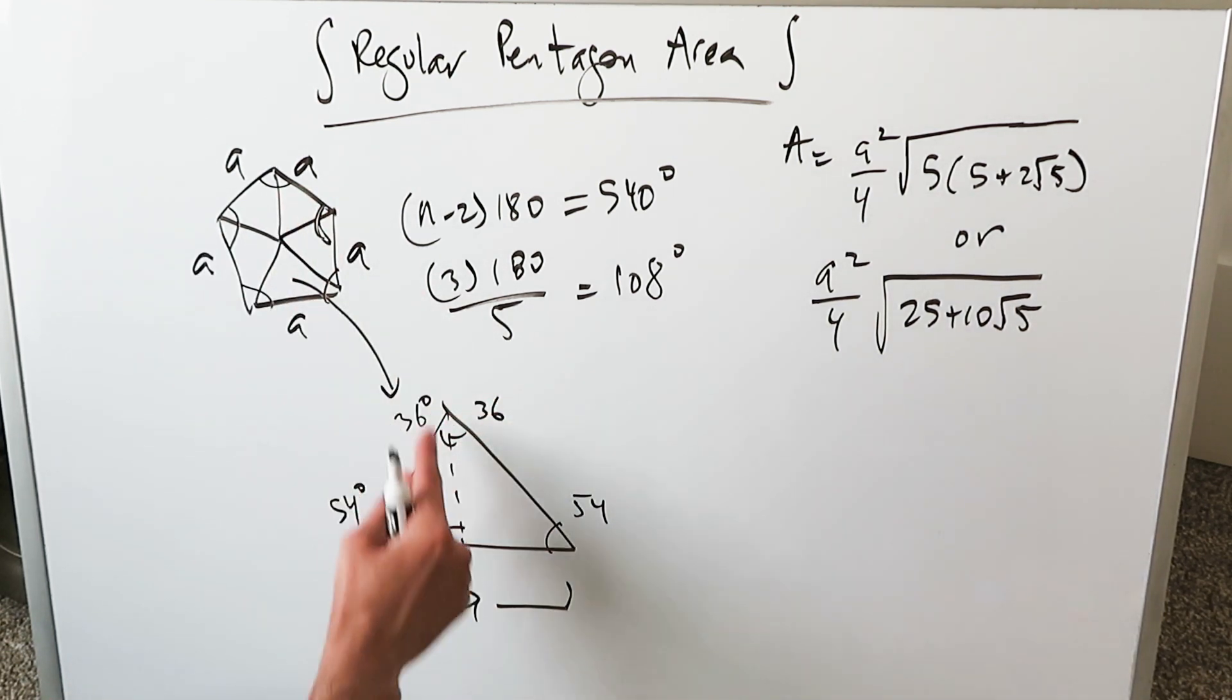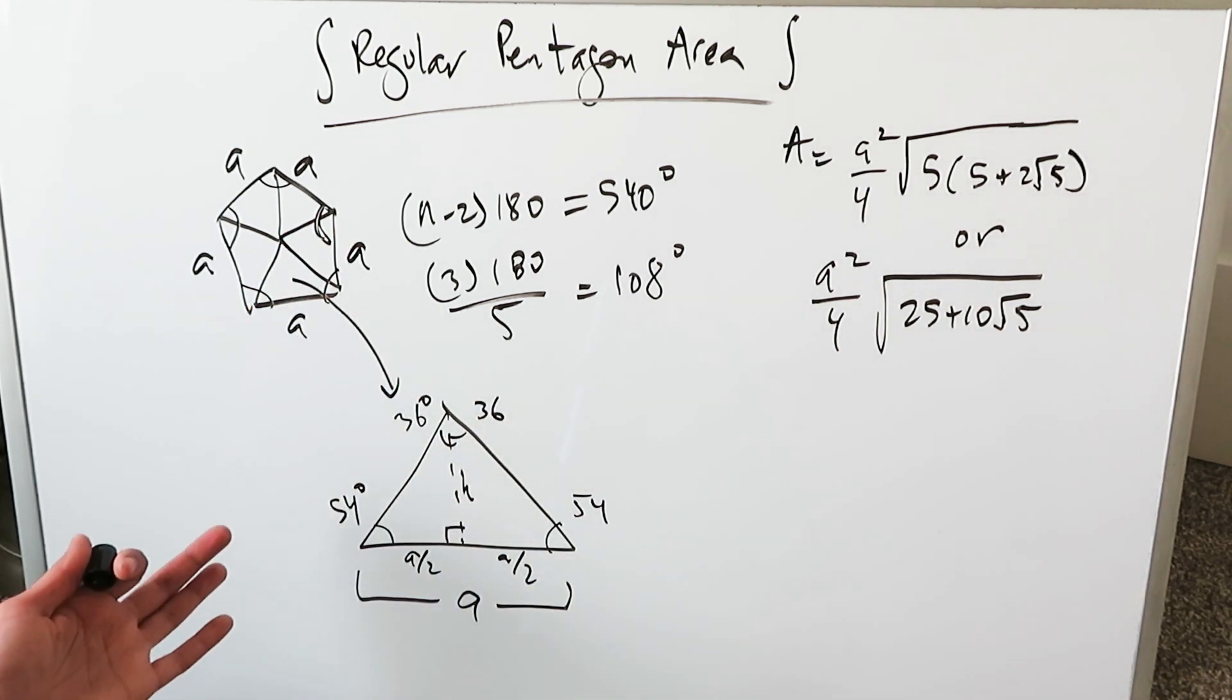You pull out a single triangle. You draw it into two separate parts by means of this bisecting line. You have A over 2 and A over 2. We need to know this H because if you can determine the area of this triangle, there are five of them. You can integrate them. But again, the problem is we don't have trigonometric ratios here to help us.